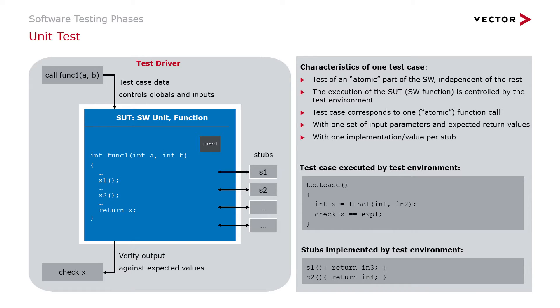Unit testing is testing a small piece of software in isolation, and each test typically only calls a single function or a few functions. Stubbing and mocking is used to resolve software dependencies for any code that is not provided in the software under test. The test harness is responsible for setting up the input data to the software under test — this could be input parameters to the functions under test, global data, or even data provided by mocks. Once the input data is set up, the test harness calls the functions under test and at the end verifies the output against the expected test results.